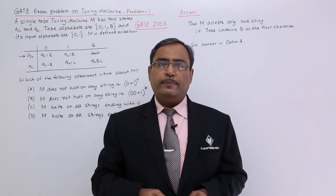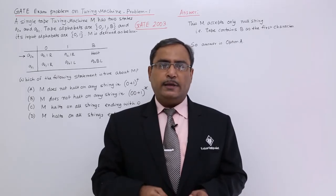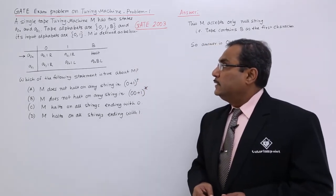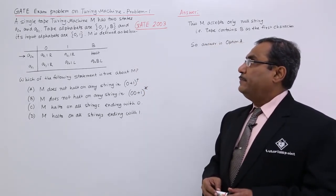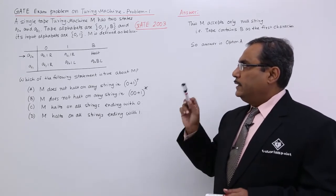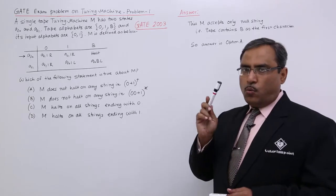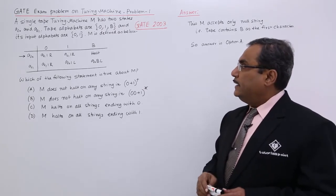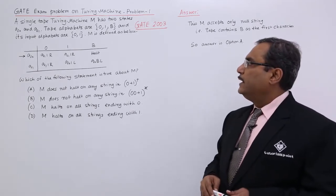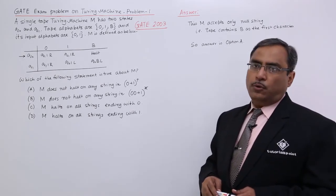Let us solve one problem on Turing machine. This question came in the previous GATE exam. A single tape Turing machine capital M has got two states Q0 and Q1. Tape alphabets are 0, 1 and blank, and its input alphabets are 0 and 1. M is defined as below.